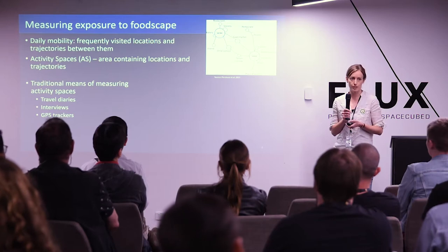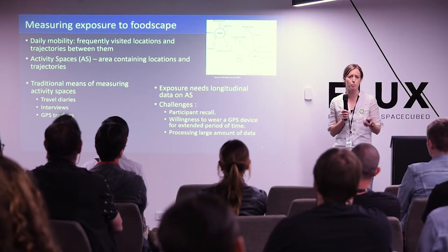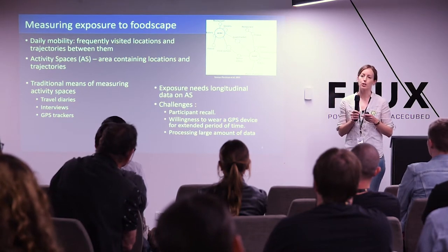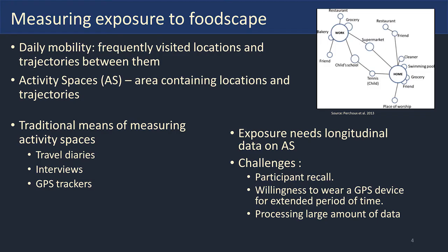Traditional means of measuring activity spaces include travel diaries, interviews, and GPS trackers, but to get an idea of exposure we need longitudinal data collected over a reasonably long period of time. Challenges with these traditional methods include participant recall — people often can't remember where they were a month ago — as well as willingness to wear a GPS tracker for an extended period, and the challenge of processing the large amounts of data that come out of longer collection periods.